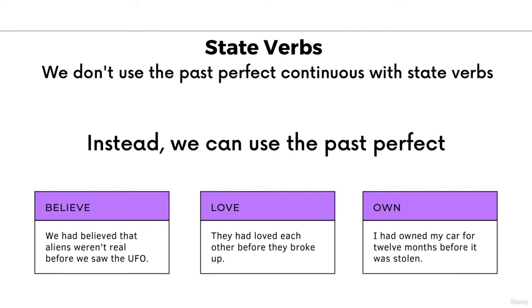Now there's the important issue of state verbs — always a confusing situation. Generally speaking, we don't use state verbs with continuous tenses, and that includes the past perfect continuous. So we don't use the past perfect continuous with state verbs; instead, we try to use the past perfect. Believe, love, and own are state verbs because they describe a state of being — they don't describe an action per se. We had believed that aliens weren't real before we saw the UFO. They had loved each other before they broke up. I had owned my car for 12 months before it was stolen. All of these are state verbs, so we use the past perfect and not the past perfect continuous.